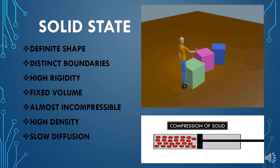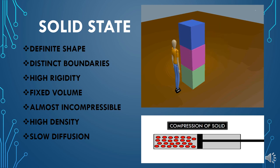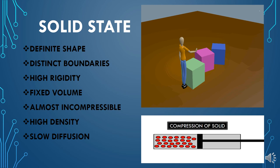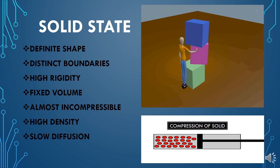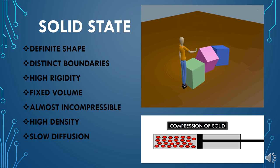Solids have very high density because for a particular volume, the number of particles is very large due to their very close packing. Hence, solids have very high density. Next, solids show slow diffusion. Diffusion and intermixing of particles depend on the inter-particle space and kinetic energy. Since solids have very little space between particles and very low kinetic energy, solids diffuse with great difficulty — one solid does not easily diffuse into another solid.